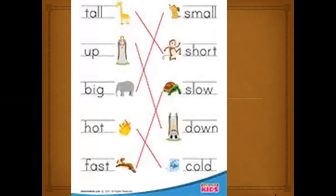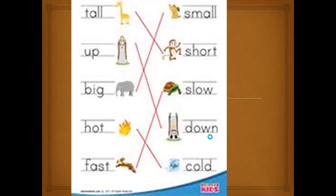This is one set of worksheets. We have one which is done for us: tall, up, big, hot, fast, small, short, slow, down, cold. So tall is a match for short, up is a match for down, big is a match for small, hot - cold, fast - slow. The worksheet isn't very clear, we will try to do something else.